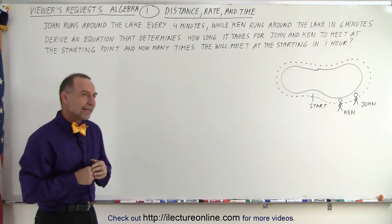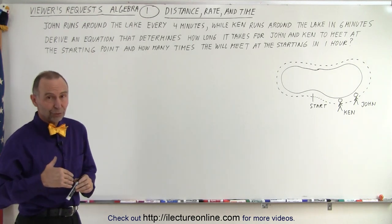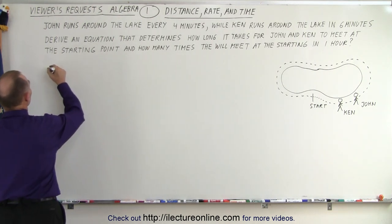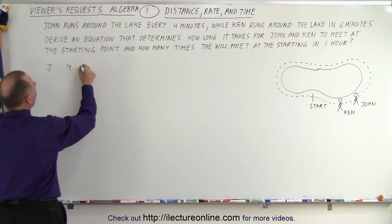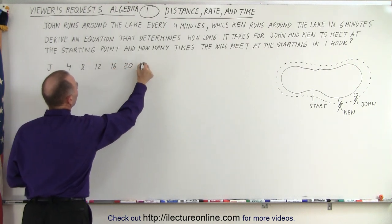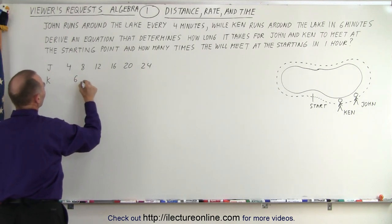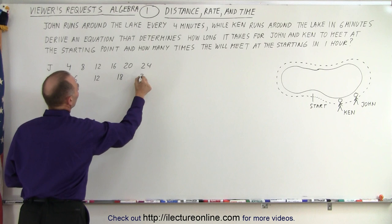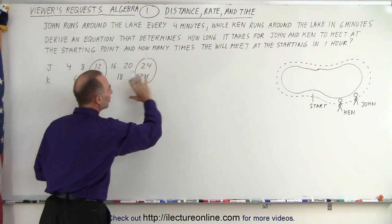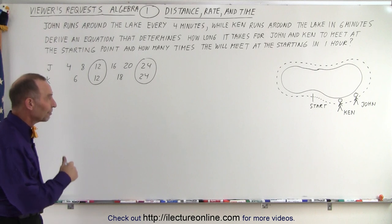It's actually not that easy of a problem unless you realize how to go about it. Of course, we can do it using arithmetic. For example, the number of laps for John: he'll do a lap after four minutes, another lap at eight minutes, 12 minutes, 16, 20, 24 minutes. For Ken, he does one in six, then in 12, then in 18, then in 24. So you can see they meet after 12 minutes, they meet after 24 minutes, and you can go on all the way to an hour. But that's not deriving an equation.